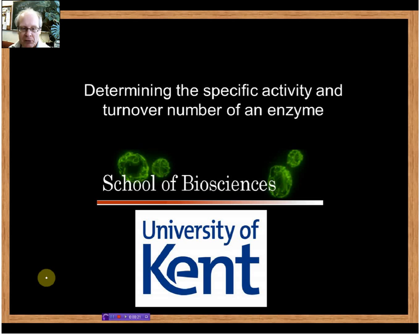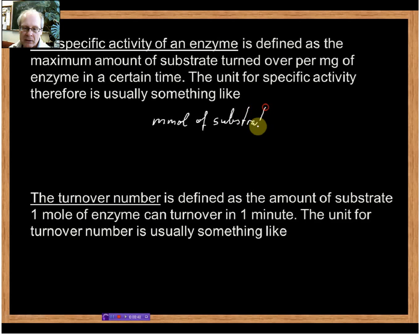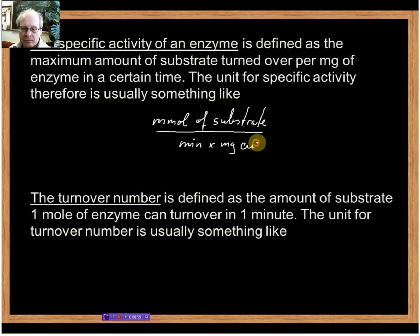So let's start with a couple of definitions. The specific activity of an enzyme is defined as the maximum amount of substrate that can be turned over per milligram of enzyme in a certain time. So for the unit we would get something like millimole of substrate per minute and milligram of enzyme. The turnover number is defined as the amount of substrate that one mole of enzyme can turn over in one minute.